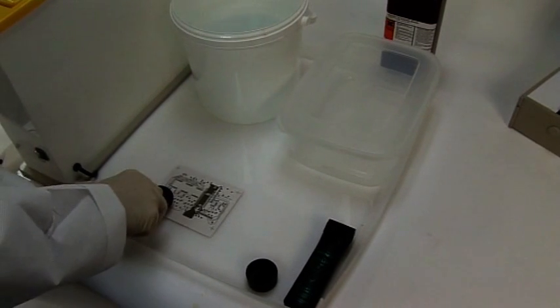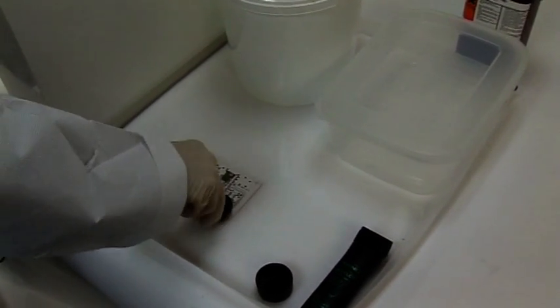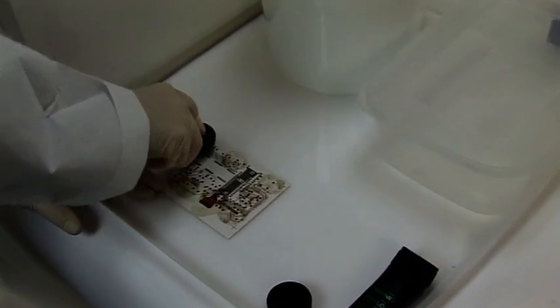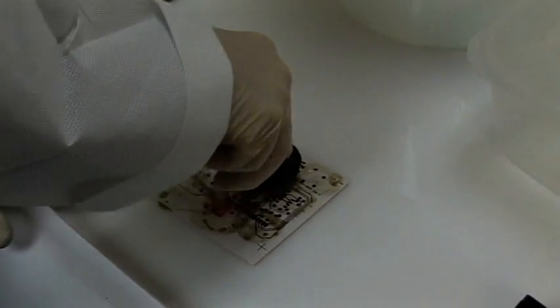To do this the photoresist first needs to be removed. It can be stripped in one of our temperature controlled PCB tanks or, as shown here, with a stripper applicator. Place the drilled board on a tray and using the SN120 strip applicator apply the stripper to the board.